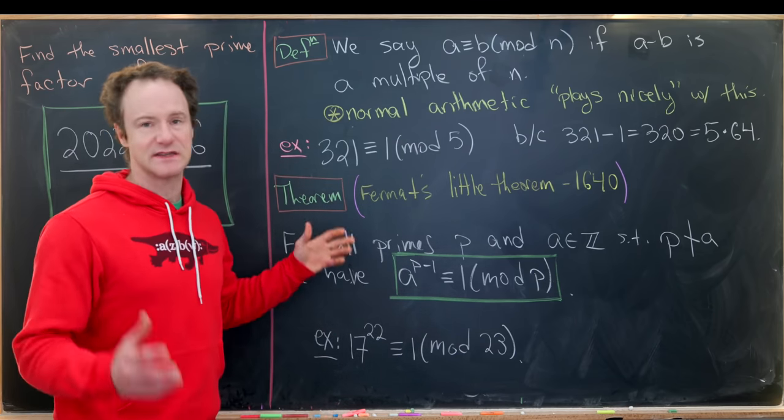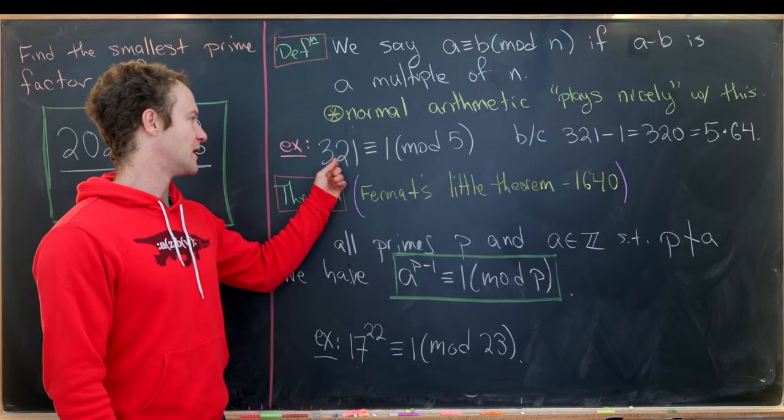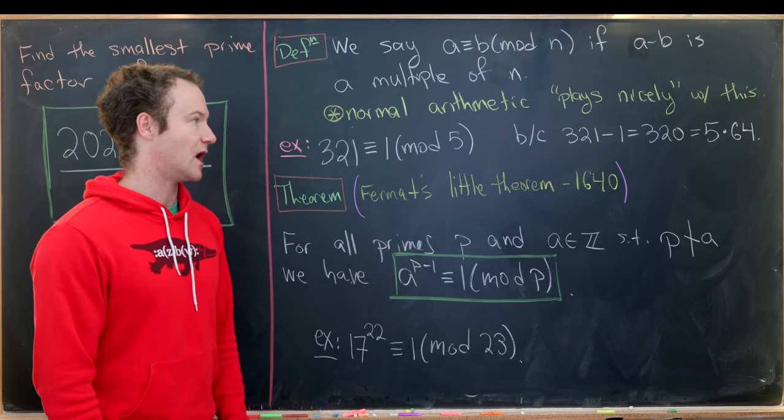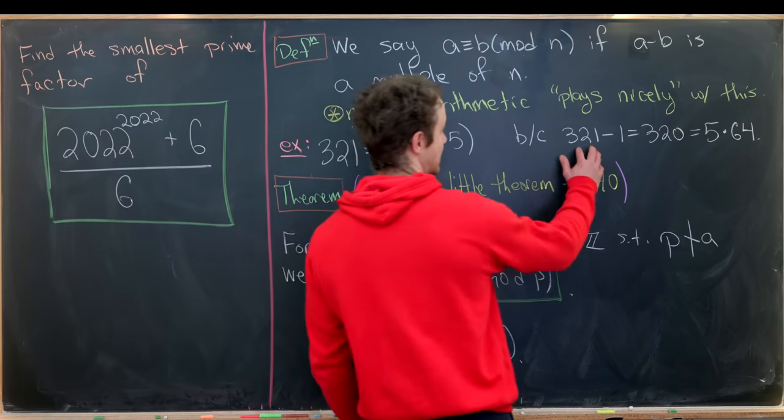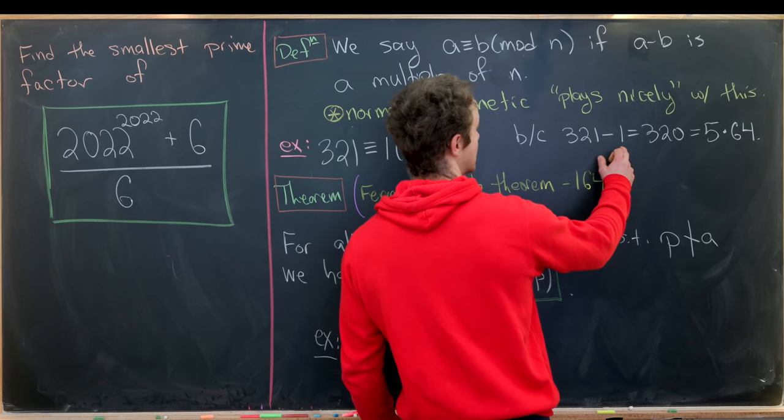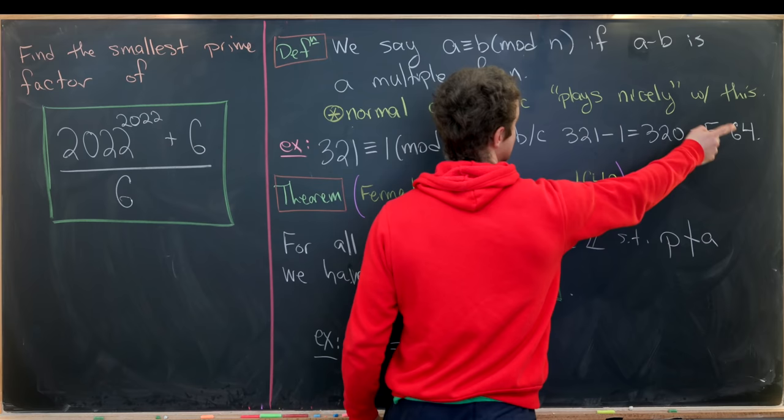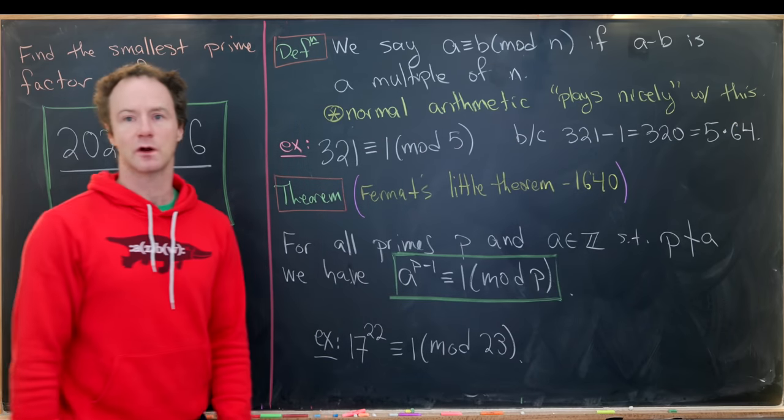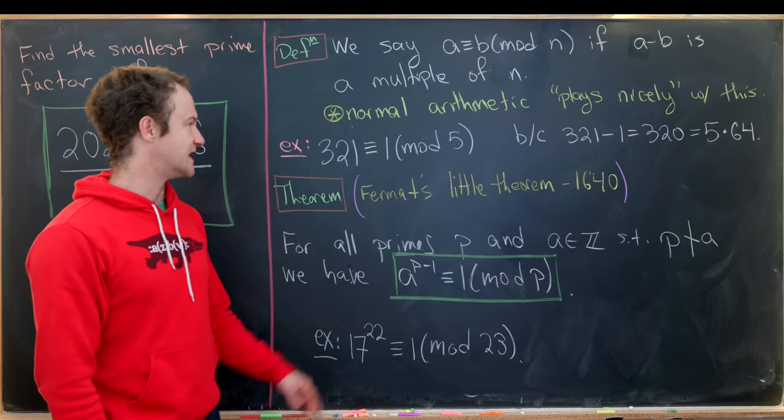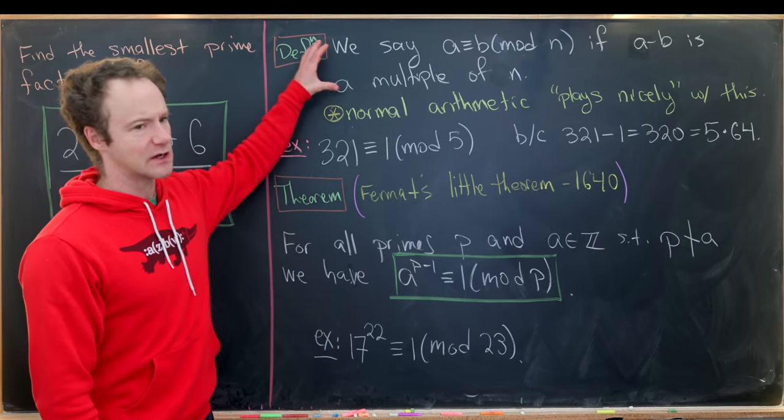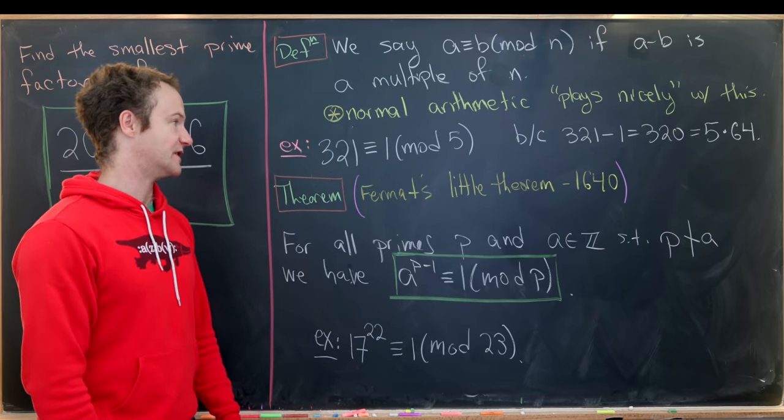And then I've got the following example just as kind of a warm-up. The number 321 is congruent to 1 mod 5, and that's because 321 minus 1 equals 320, but that's a multiple of 5, it's 5 times 64. Another way of looking at this is that a and b have the same remainder when divided by n.